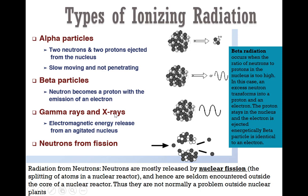Gamma rays and x-rays are not similar to alpha and beta — they are electromagnetic energy released from an agitated nucleus. Neutrons from fission are a less-taught topic because neutrons are mostly released by nuclear fission and the splitting of atoms in a nuclear reactor, and hence are seldom encountered outside the core of a nuclear reactor. This process shows a neutron coming in, bombarding radioactive isotopes, splitting them, and releasing more neutrons, which can cause a chain reaction in a nuclear reactor.